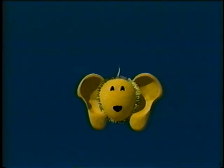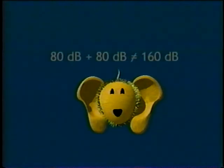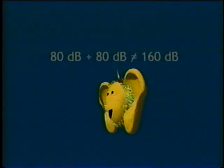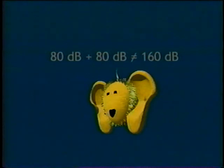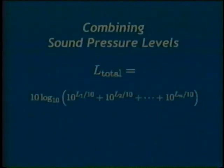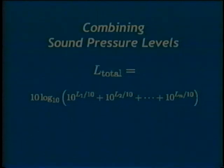The sound pressure level is often represented by a capital L. When you need to add sound pressure levels, it is not a simple matter of algebraically adding the numbers. 80 dB plus 80 dB does not equal 160 dB. The decibel scale is logarithmic. Therefore, to combine decibel values, each must be converted to a linear scale, added, and then converted back to a logarithmic scale. L1, L2, up to Ln represent the n sound levels that are to be combined.